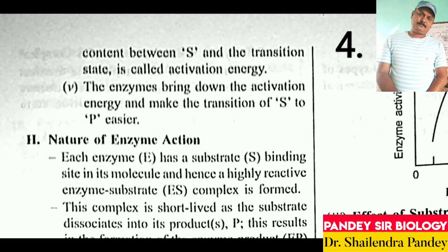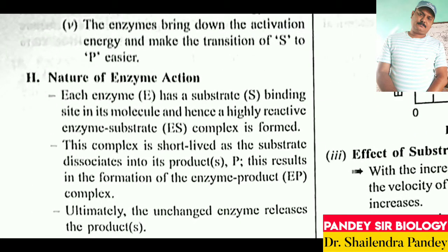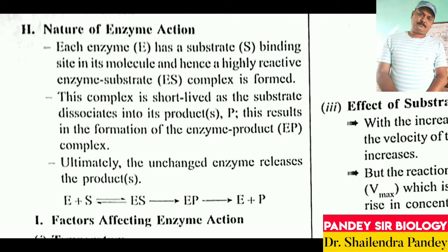The difference in the average energy content between S and the transition state is called activation energy. The enzyme brings down the activation energy and makes the transition from S to P easier. The enzyme E has a substrate S binding site in its molecule, forming a highly reactive enzyme-substrate complex. This complex is short-lived as the substrate dissociates into products P, forming an enzyme-product EP complex. Ultimately, the unchanged enzyme releases the product.